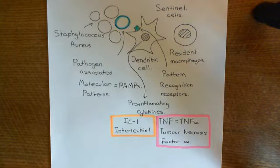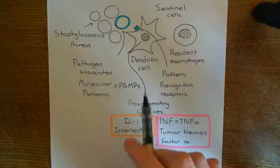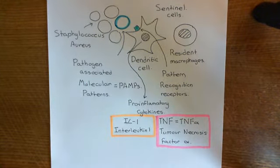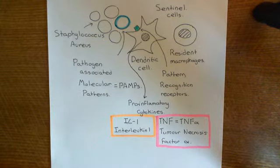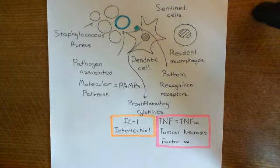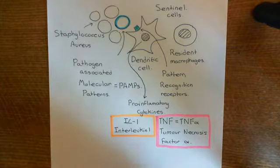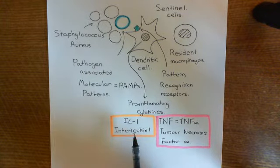These pathogen-associated molecular patterns are a giveaway sign to the sentinel cells — the dendritic cells and the resident macrophages, which are always on the lookout for invading cells. They have pattern recognition receptors which bind to these pathogen-associated molecular patterns, triggering downstream pathways that lead to activation of the sentinel cells, which then release pro-inflammatory cytokines. The main two are interleukin-1 (IL-1) and tumor necrosis factor alpha (TNF-alpha).